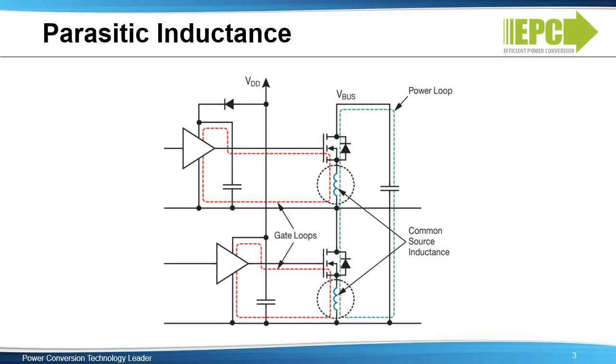Using a half-bridge configuration, we will consider the sources of inductance. In the half-bridge configuration, there are three main loops to consider.